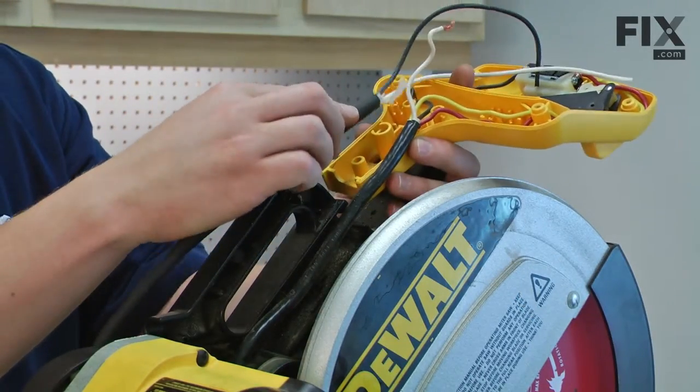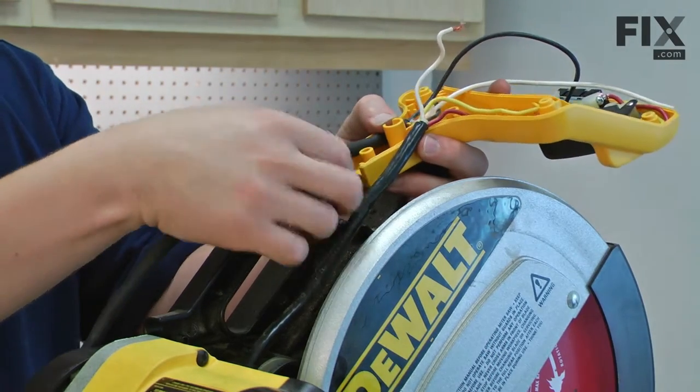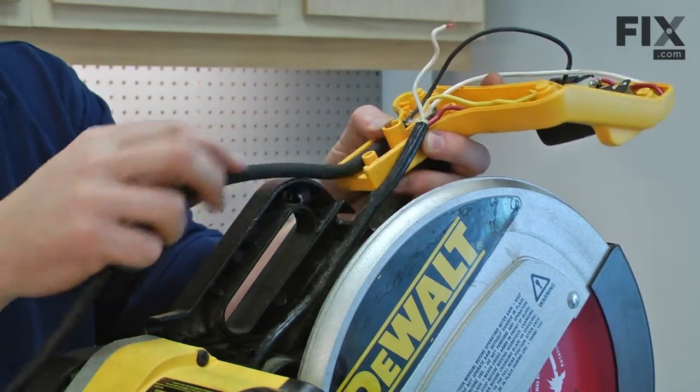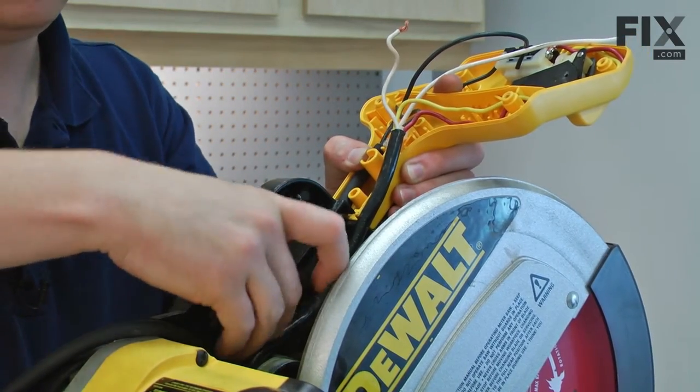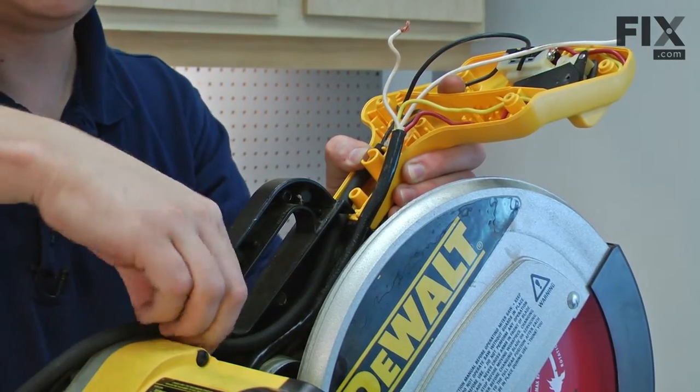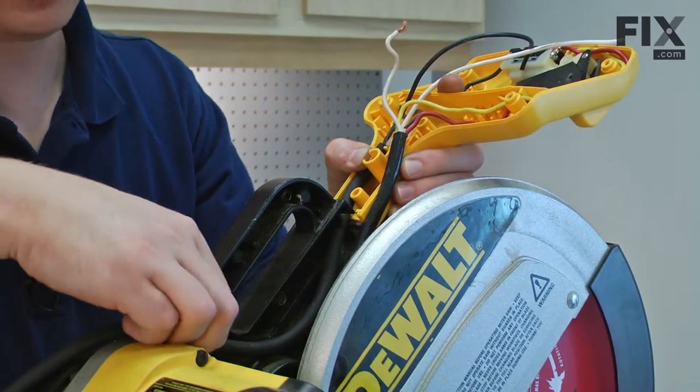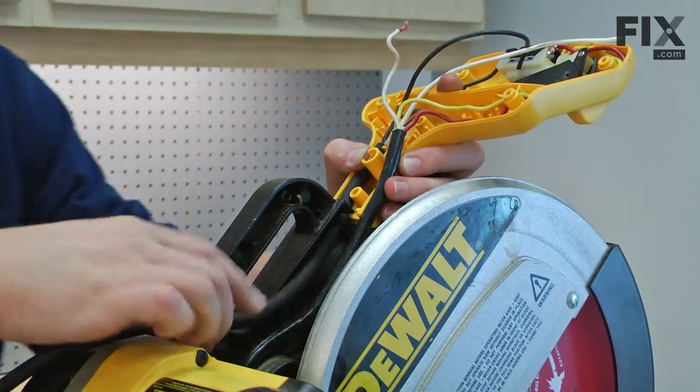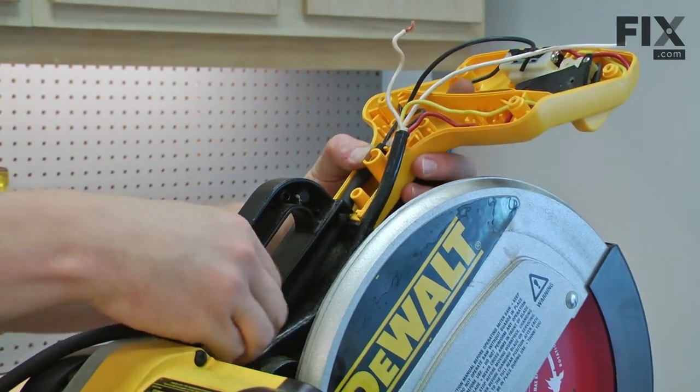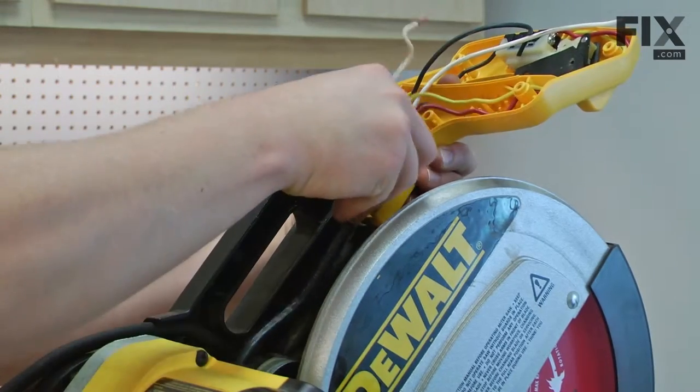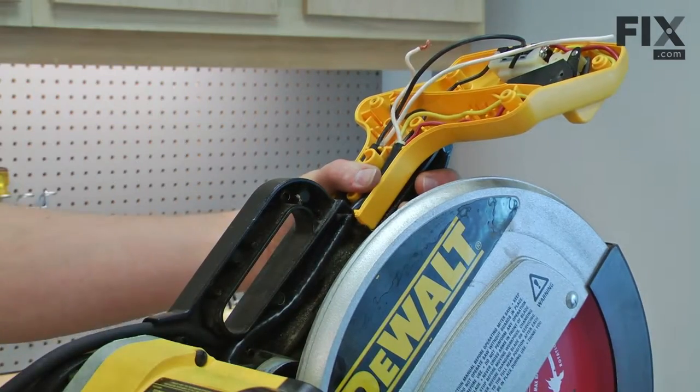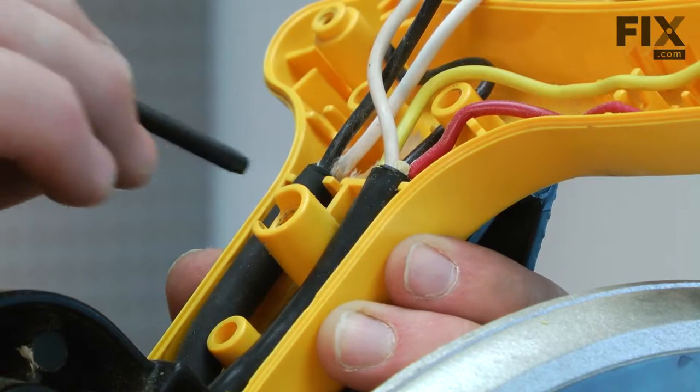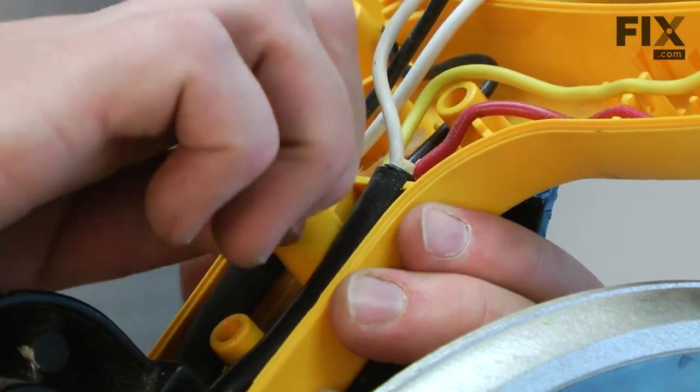Now, I can go ahead and insert the new cord into the lower part of the handle, and then I'll route the cord through the upper handle. The cord needs to go behind the motor wires, so it goes in first. At this point, I'll reinstall the screw that secures the lower handle.